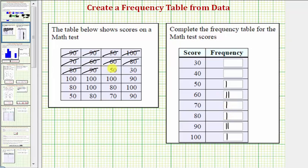Next, 80, 90, 50, 30. So marking: 80, 90, 50, 30. Next row we have 100, 100, 100, 90. So three 100s—one, two, three—and 90.